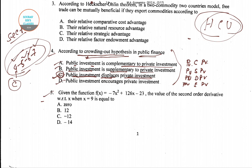Now we go to question number five. A function is given and we need to find the value of the second order derivative with respect to x when x equals 9. Four options are given, so first we will write down the function.